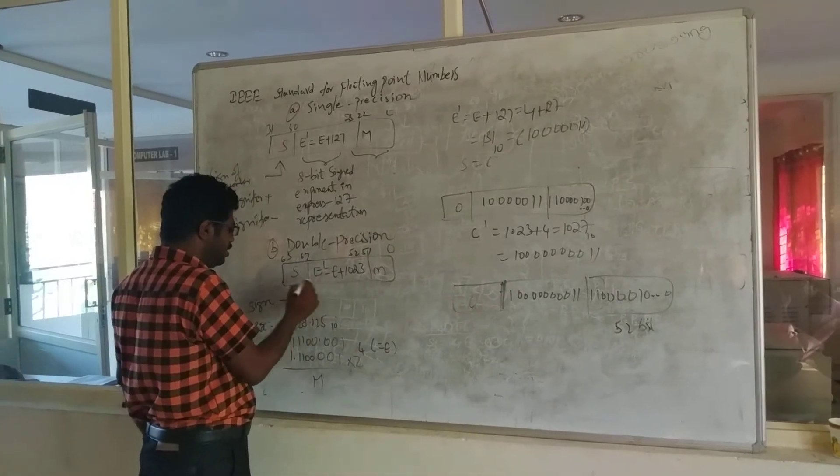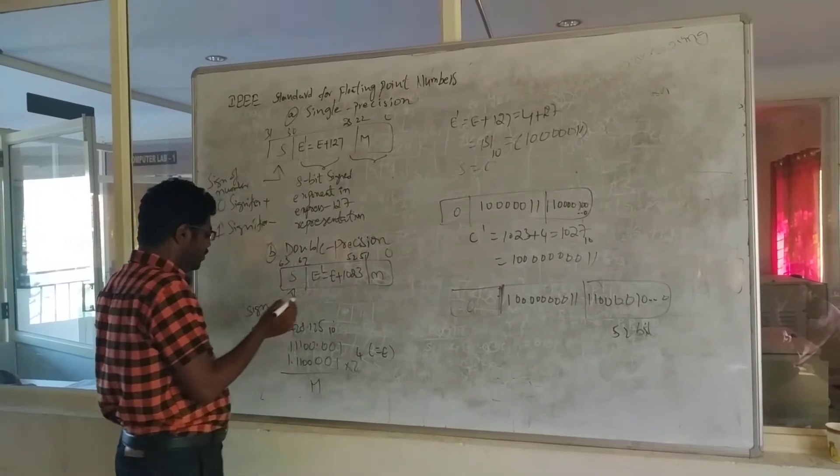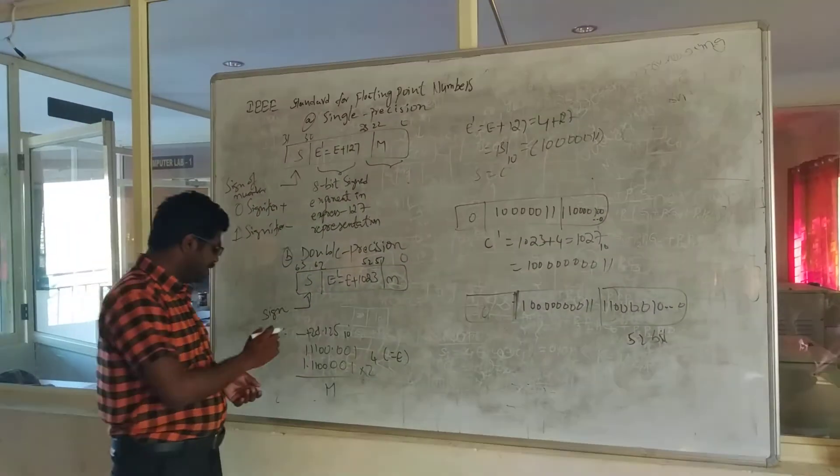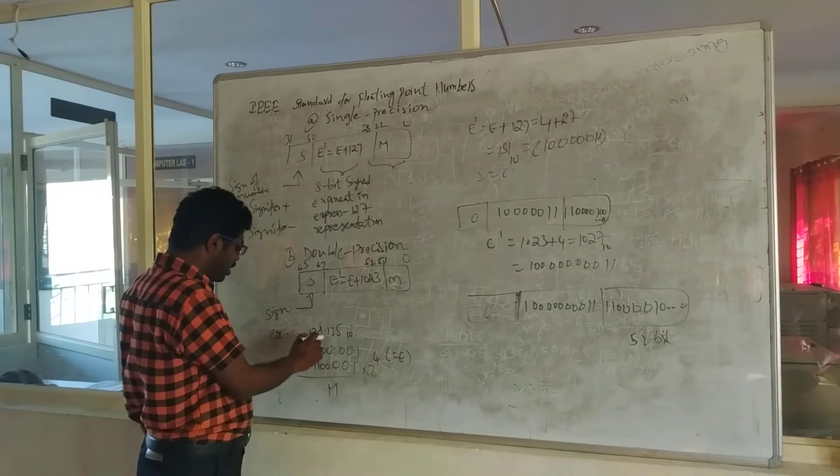Let's go for an example now. Assume that we are going to calculate the single precision for the number, for example, plus 28.125 in decimal base 10.